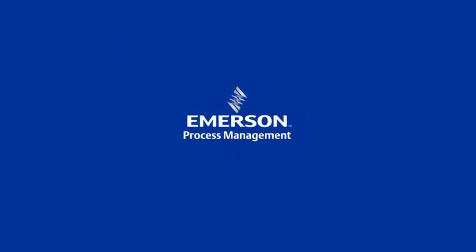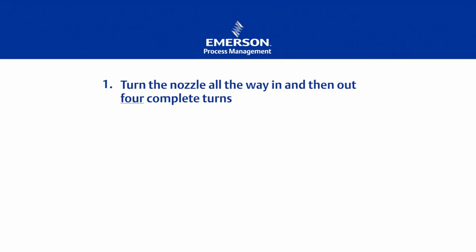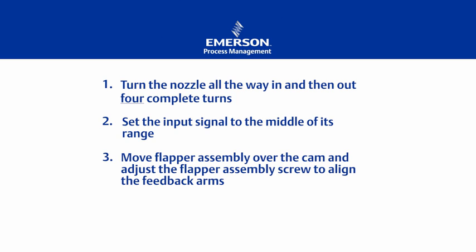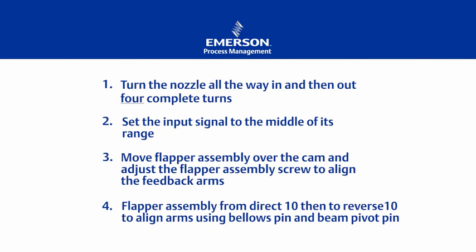So, the first part of calibrating a Fisher 3582 positioner is making sure the beam is aligned with the nozzle. And we can do that in just four easy steps. First, turn the nozzle all the way in and then out four complete turns. Next, set the input signal to the middle of its range. Then move the flapper assembly over the cam and adjust the flapper assembly screw to align the feedback arms. Step four is to move the flapper assembly from direct 10 and then to reverse 10 to align those arms using both the bellows pin and the beam pivot pin.